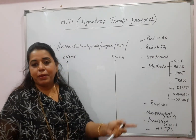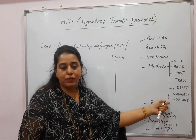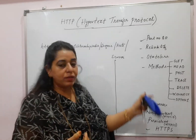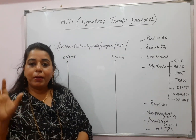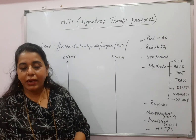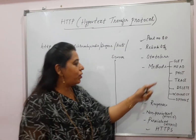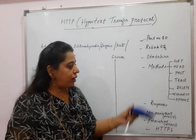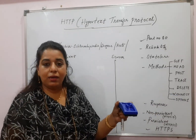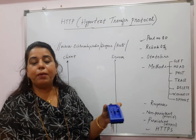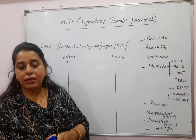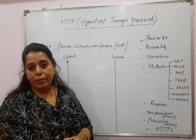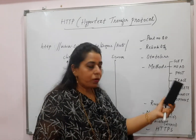HTTP makes use of these methods — the client uses these methods to get requests done. The GET method is to get a document from the server. The HEAD method is used when the client is not interested in the document itself but wants to know about it — when it was created, its size, etc. The POST method allows the client to post a document on the server. The TRACE method lets the client trace its request to verify it is reaching the server correctly — it echoes back the request. The DELETE method allows the client to delete a document from the server.